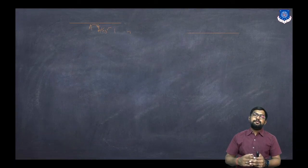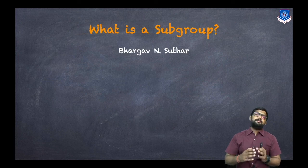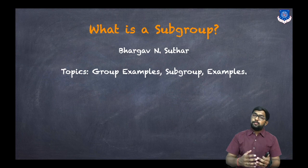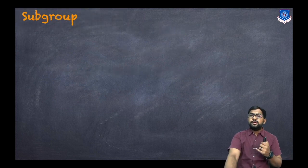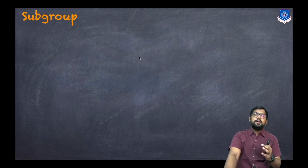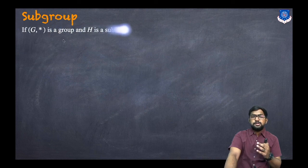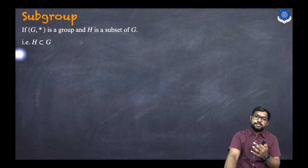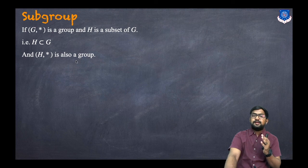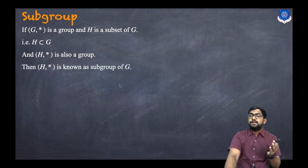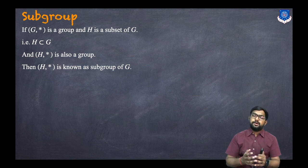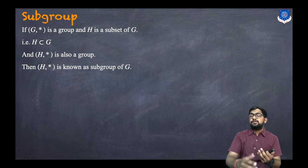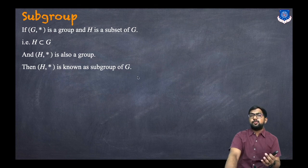Hey everyone, this is Bhargav Sathar and today we will learn about what is a subgroup. In today's session we will discuss group examples, what is a subgroup, and some examples based on that. So first, what is the definition: if G* is a group and H is a subset of G, and H* is also a group, then H* is called a subgroup of G. So the conditions are: G* must be a group, H must be a subset of G, and H must also be a group.